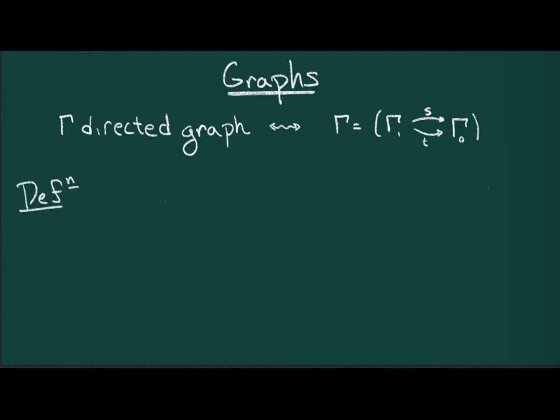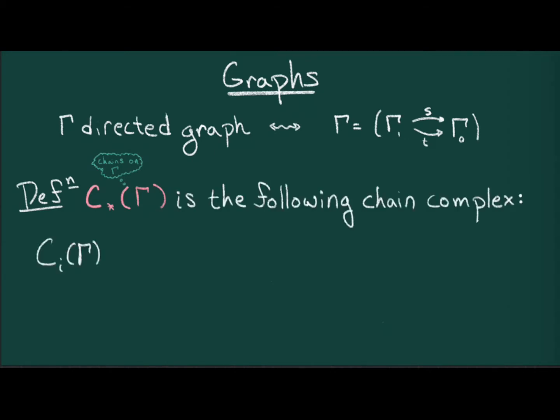The following is a linearization of this graph. Chains on γ is the following chain complex. Degree 0 is the vector space of formal linear combinations of vertices. Degree 1 is the vector space of formal linear combinations of edges. And all the other vector spaces not in degree 0 or 1 is 0.